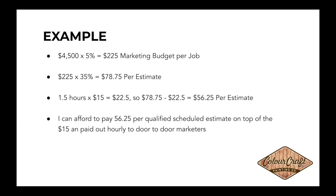If you take out the cost of the actual hourly for door-to-door — at one and a half hours it's going to cost $22.50 just for the hourly wage — and you subtract that from the $78 cost per estimate we can afford, that means we can afford to pay up to $56 per estimate. For three estimates we'd get one job, and our marketing budget would come in at $225. So I can afford to pay $56 per qualified scheduled estimate on top of the $15 hourly.